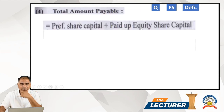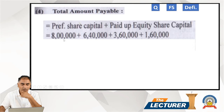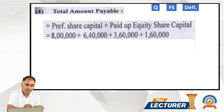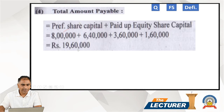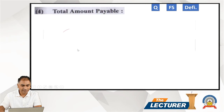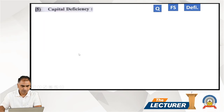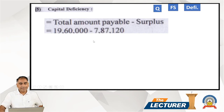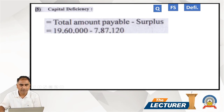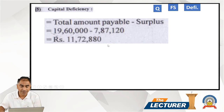The payment required for shareholders is preference capital plus paid-up equity capital. Preference shares: ₹8,00,000; equity paid-up capital for A, B, and C shares totals ₹11,60,000 — giving total repayable to shareholders of ₹19,60,000. The available surplus is ₹7,87,120. Therefore: ₹19,60,000 minus ₹7,87,120 gives a deficiency of ₹11,72,880. This deficiency has to be distributed among the three categories of shares: A, B, and C.